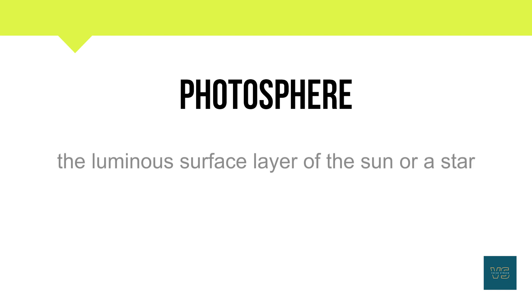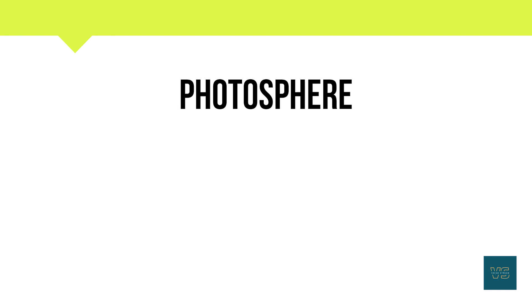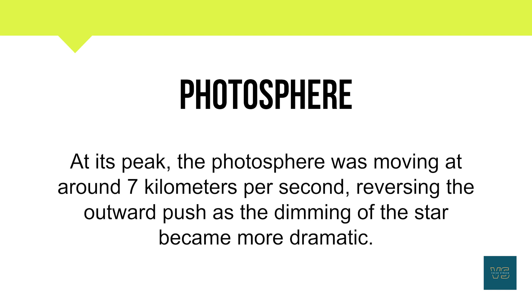Now let's see its meaning. The luminous surface layer of the sun or a star. Its example is: At its peak, the photosphere was moving at around 7 km per second, reversing the outward push as the dimming of the star became more dramatic.